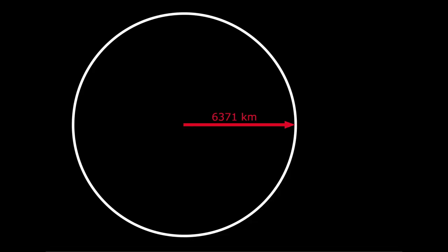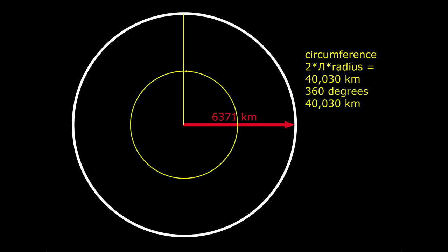The formula is simply derived from a circle with a radius of 6371 kilometers and a circumference of 2 times pi times the radius equals 40,030 kilometers. This measure represents 360 degrees of the circle, so one degree represents 111.19 kilometers.